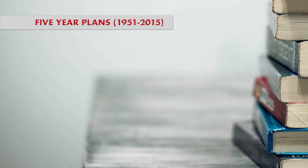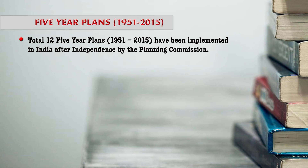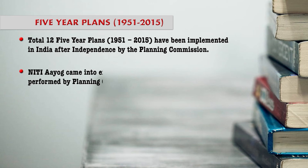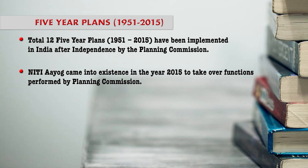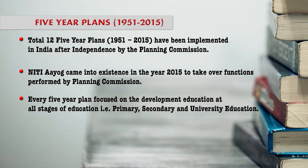Now let us focus upon the Five Year Plans. A total of 12 five year plans have been established in India, starting from 1951 to 2015. NITI Aayog came into existence in 2015 to take over the functions performed by the Planning Commission. In every five year plan, focus was on the development of education at all stages — primary, secondary, and university. What should be the priority areas in primary, secondary including senior secondary, and university education was translated, focused, and recommended with an implementation plan.